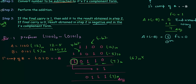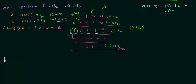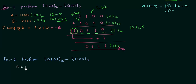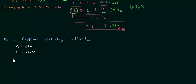Let's move to example number two. In example number two we have to perform the subtraction 0101 minus 1100. So a is equal to 0101 and b is equal to 1100. We have to find minus of b, so we will take the one's complement of b.